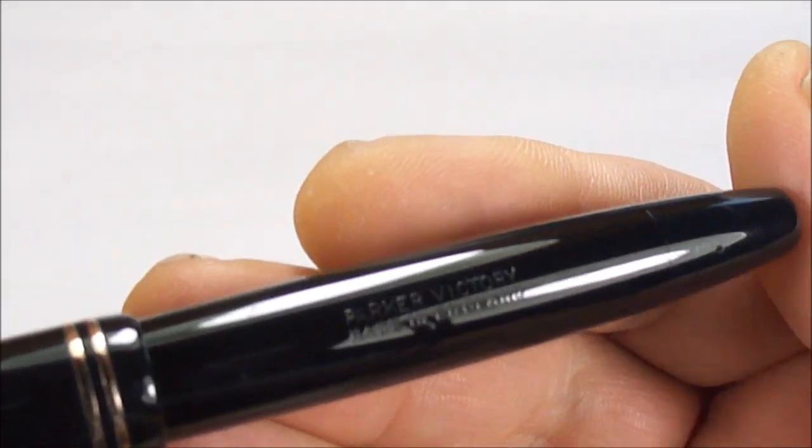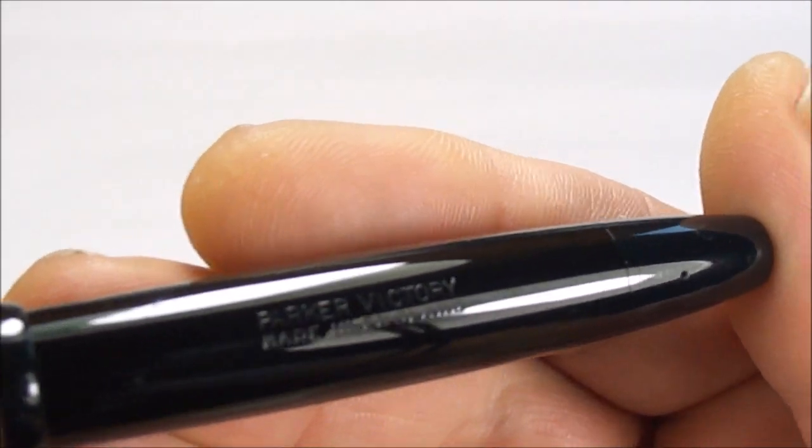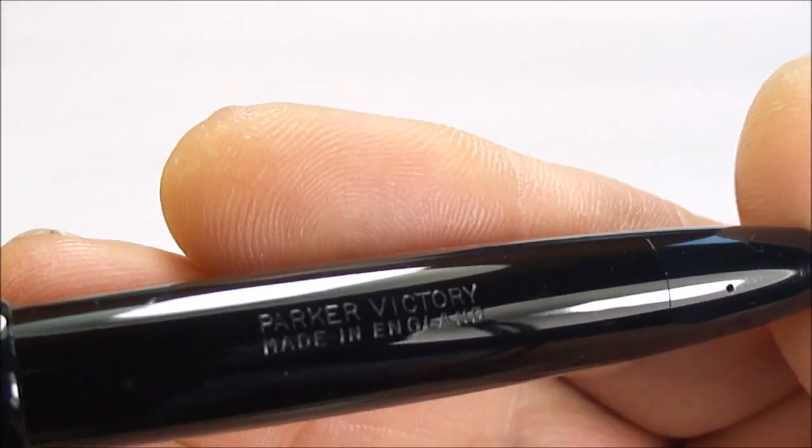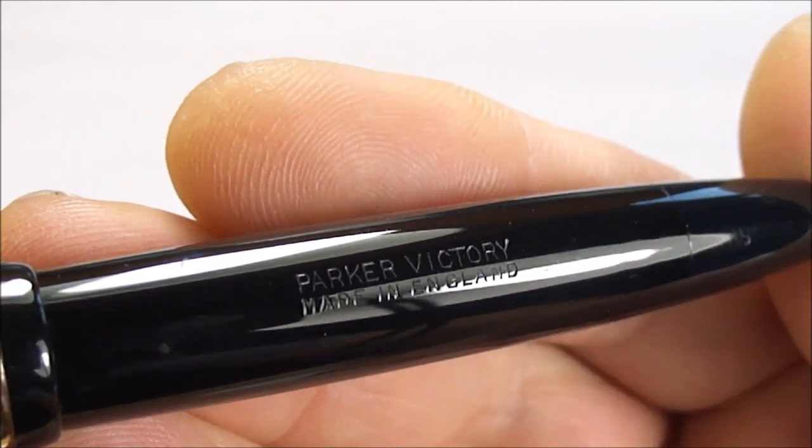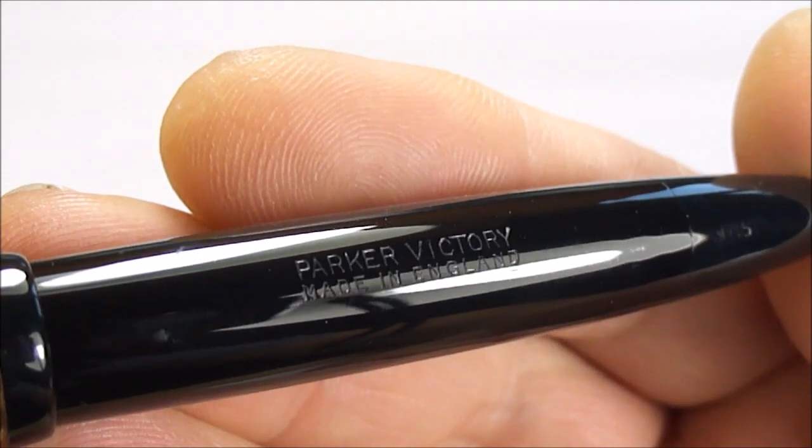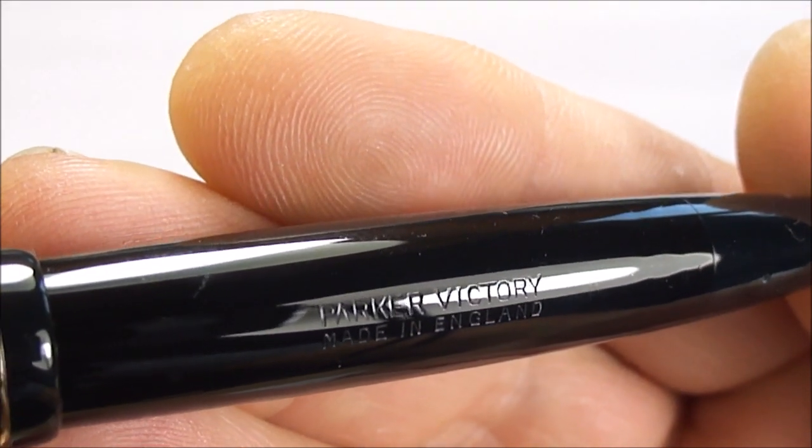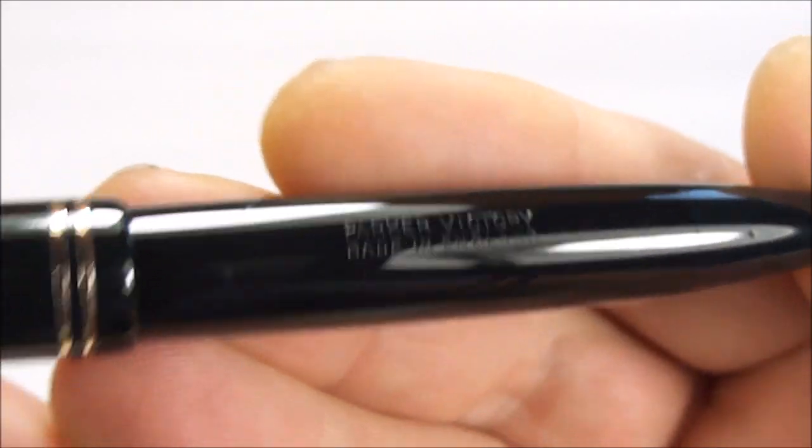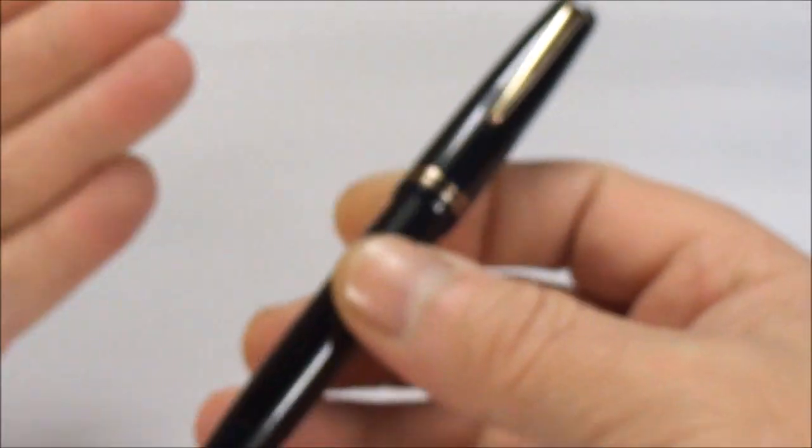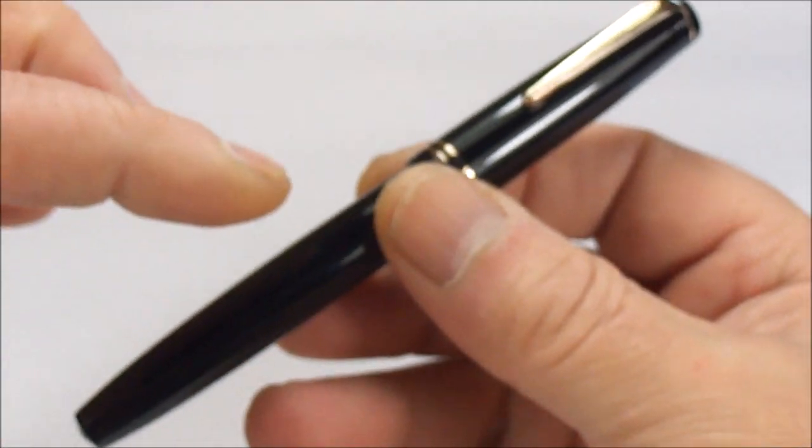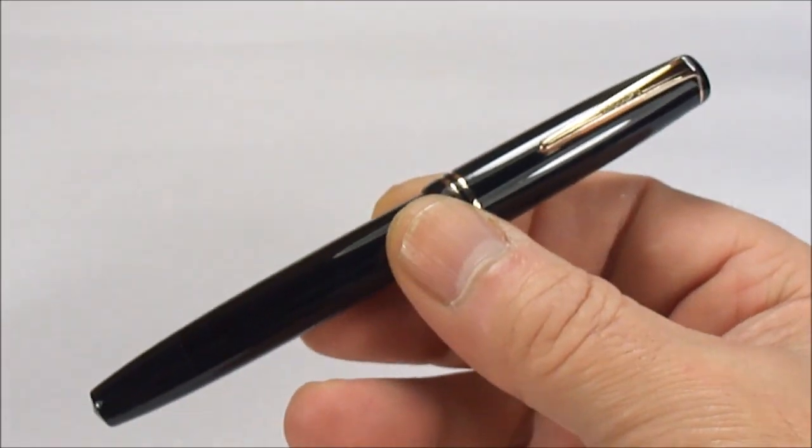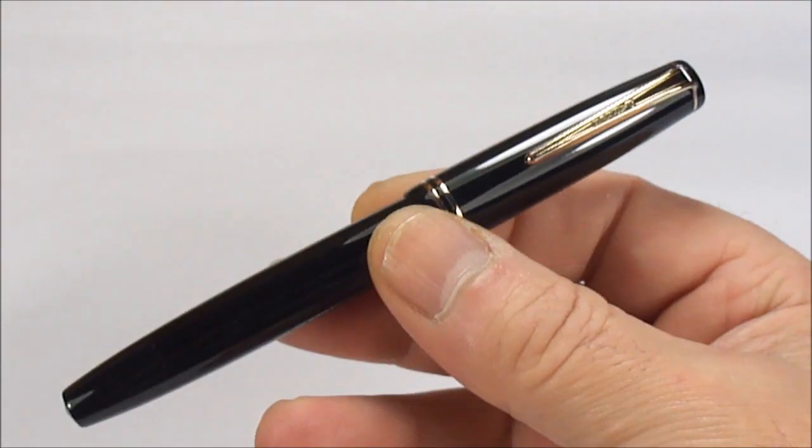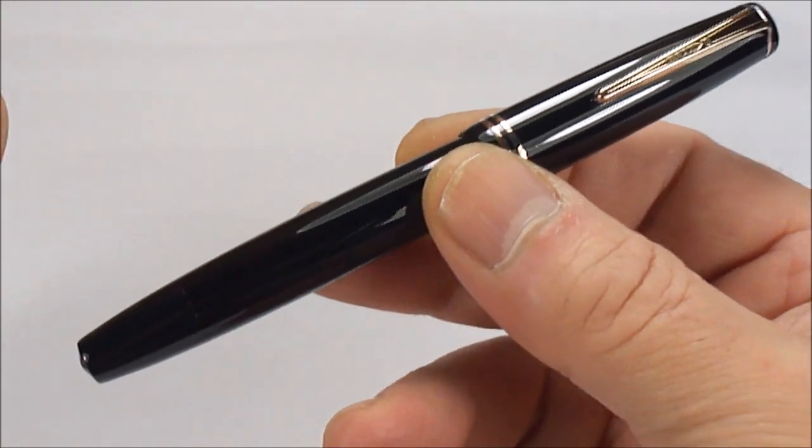Let's show you the barrel imprint. Let's keep it nice and still for you. And you'll see it reads, Parker Victory, made in England. A lovely clear barrel imprint, as you can see there. As I say, I can't say it enough, superb, quality made, fountain pens. Very sturdy, well made pens.